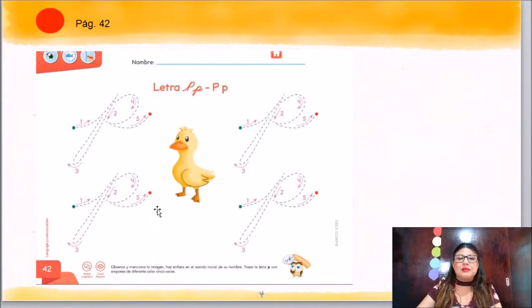¿Y qué es lo que vamos a hacer? Utilizando 5 colores diferentes, vas a trazar cada letra. Recuerda que tienes que comenzar donde está el puntito verde y vas a terminar donde está tu puntito rojo. También es muy importante que sigas la dirección de las flechas y los números como te va indicando.